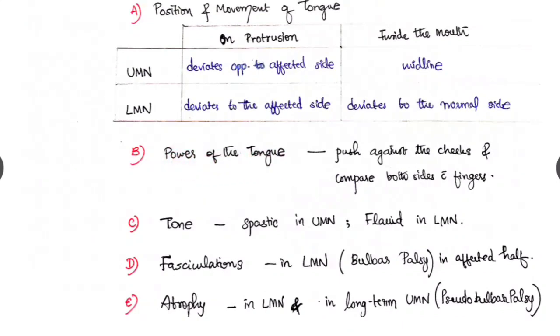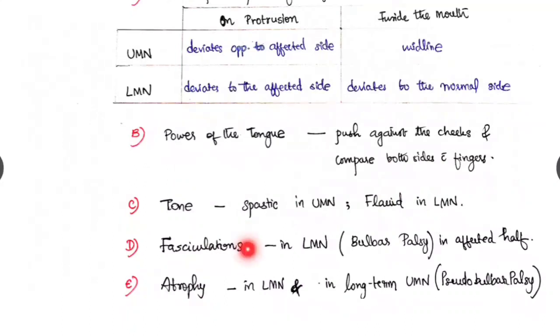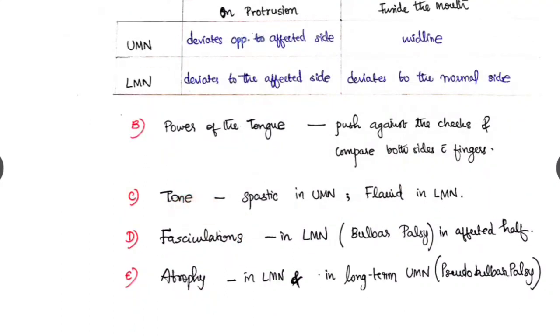The power of the tongue we test by asking the patient to push the tongue against the cheeks, and we compare both sides with the examiner's hand. The tone of the tongue, it is spastic in UMN palsy, flaccid in LMN palsy. Look for any fasciculations. In LMN palsy, like bulbar palsy, there will be fasciculations in the affected half. Look for any atrophy. It is seen in LMN palsy and also in long-term UMN palsy like pseudobulbar palsy.